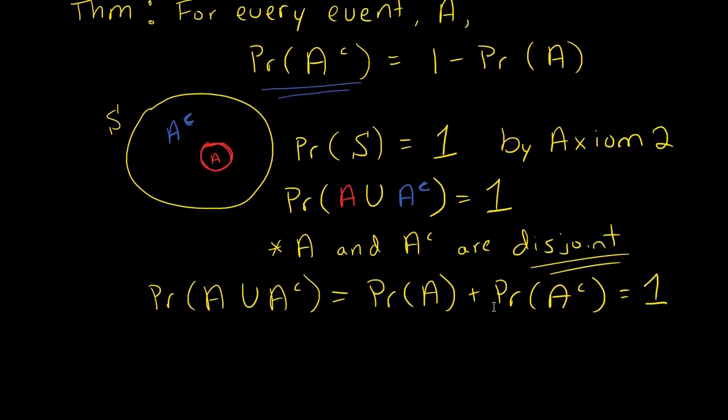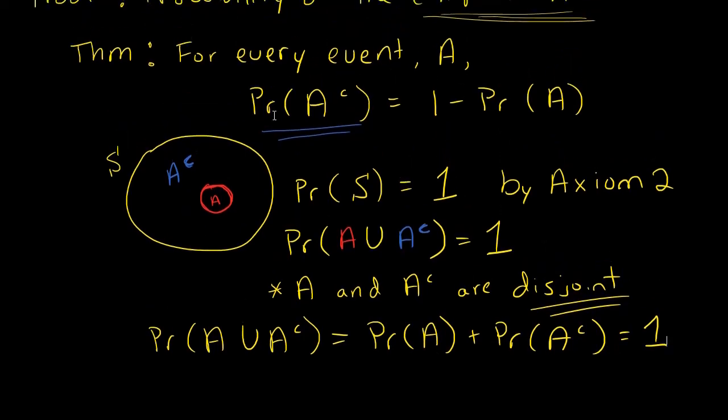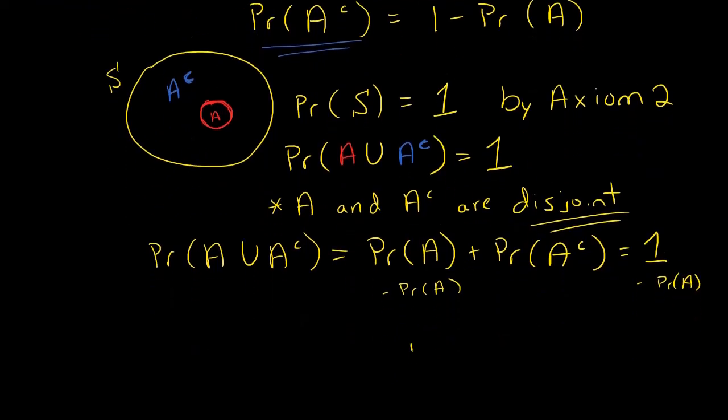All right, so once you're here, we've almost proved the theorem. Last thing I need to do is just a little bit of algebra to get the probability of A complement by itself. So what I'll do is I'll go ahead and subtract the probability of A from both sides of this equation here. And I'll be left with the probability of A complement equals 1 minus the probability of A. So that was basically, that is my proof of this theorem.